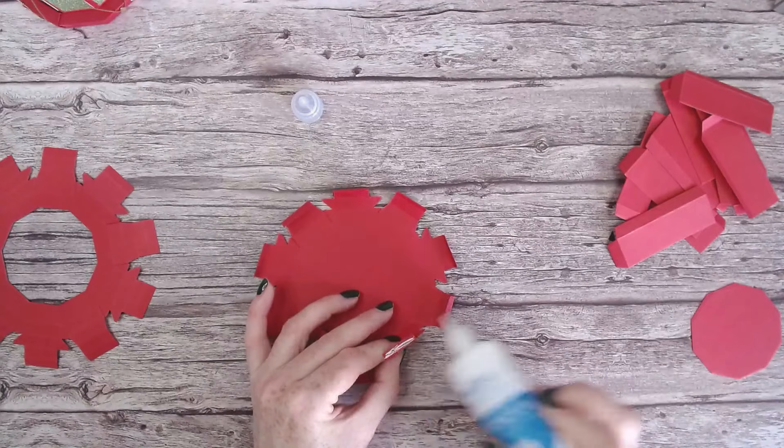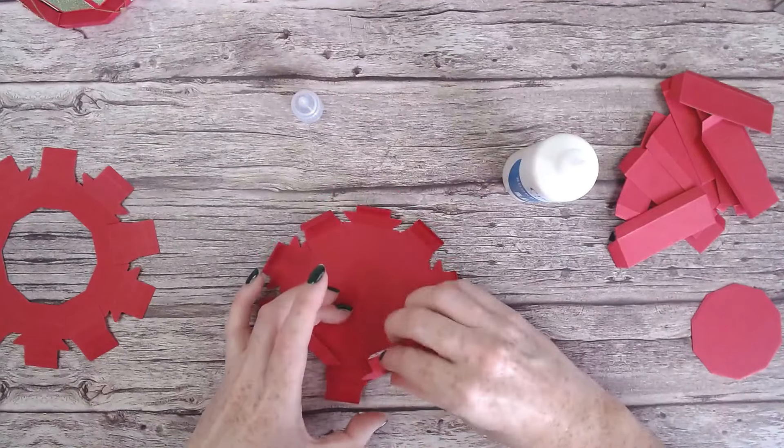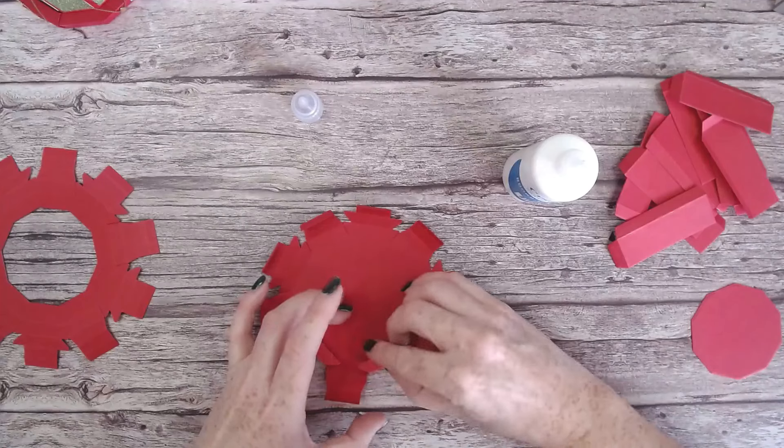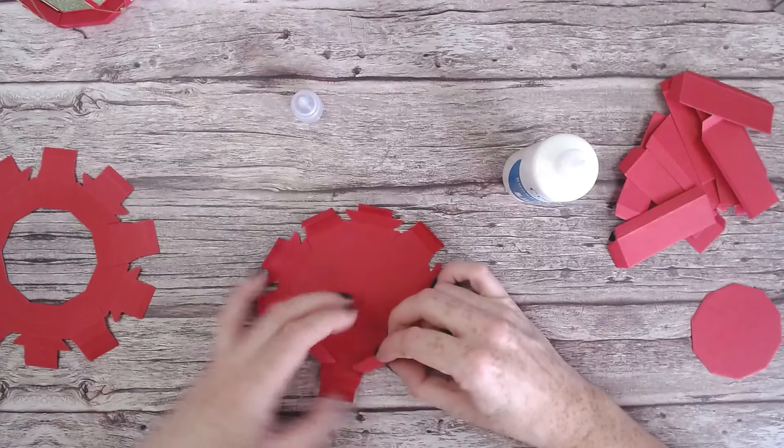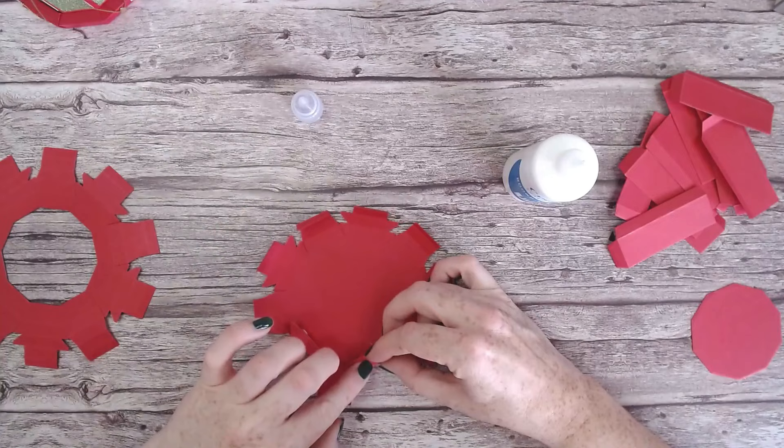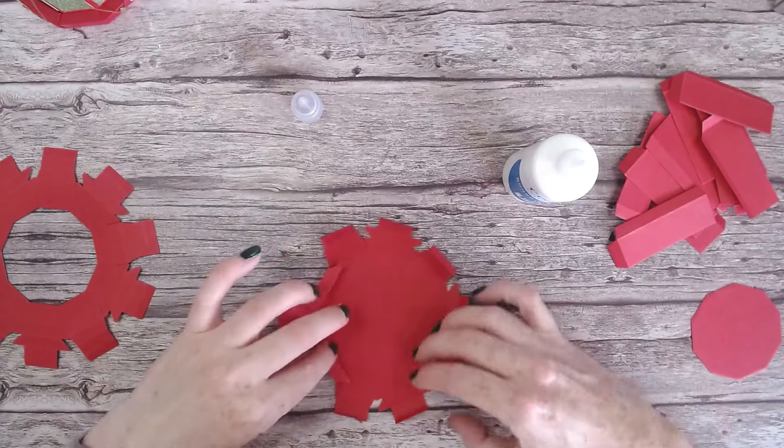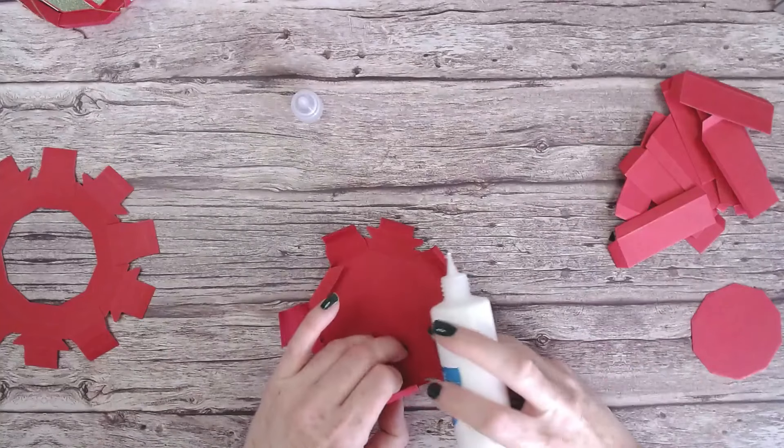If you're using a shiny surface then definitely use a hot glue gun for that, because this can take a little bit of time to dry, especially if you are using it with something shiny.